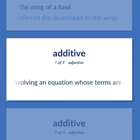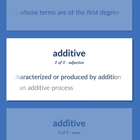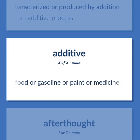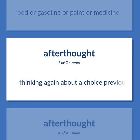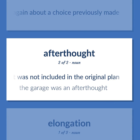Additive: Designating or involving an equation whose terms are of the first degree. Characterized or produced by addition. Example: An additive process. Something added to enhance food or gasoline or paint or medicine. Afterthought: Thinking again about a choice previously made. An addition that was not included in the original plan. Example: The garage was an afterthought.